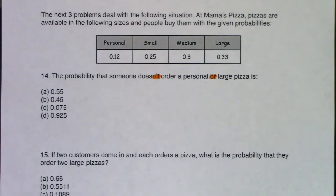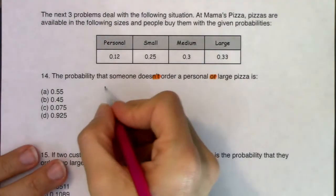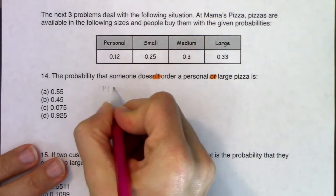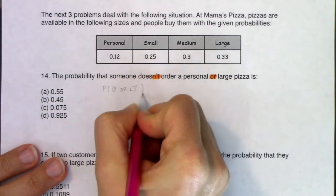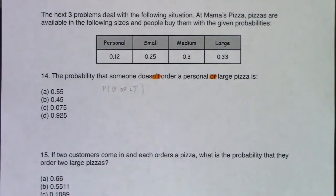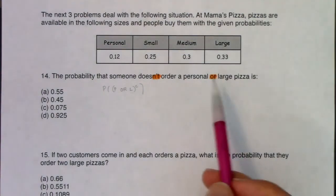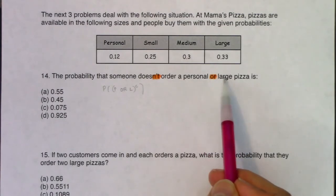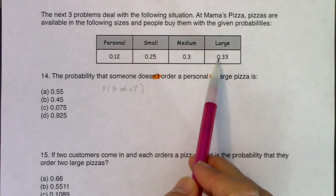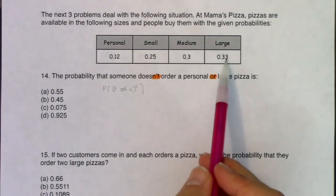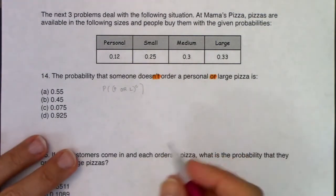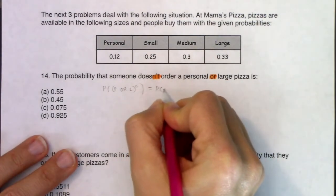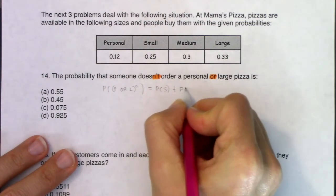I want the probability that someone does not order a personal or large. I'll put a complement around that. That's pretty convoluted set notation, but if you take a step back: what's the likelihood that somebody gets a personal or a large? It's these two. So what's the likelihood that they don't? It's going to be these two, because if you're not ordering a personal or a large, it means you're ordering a small or a medium.